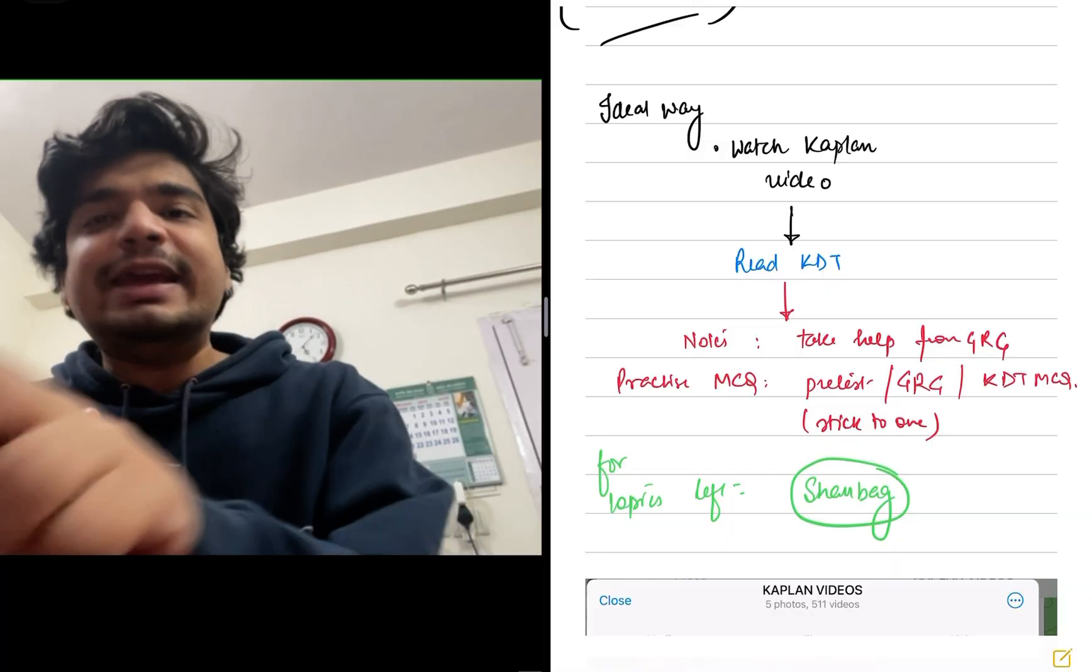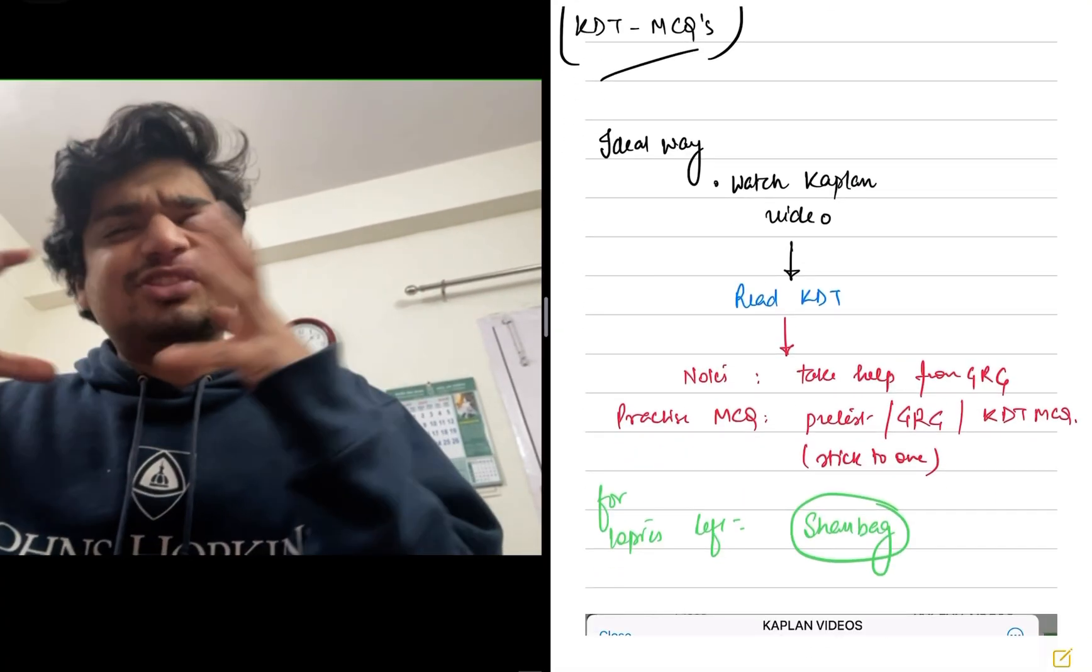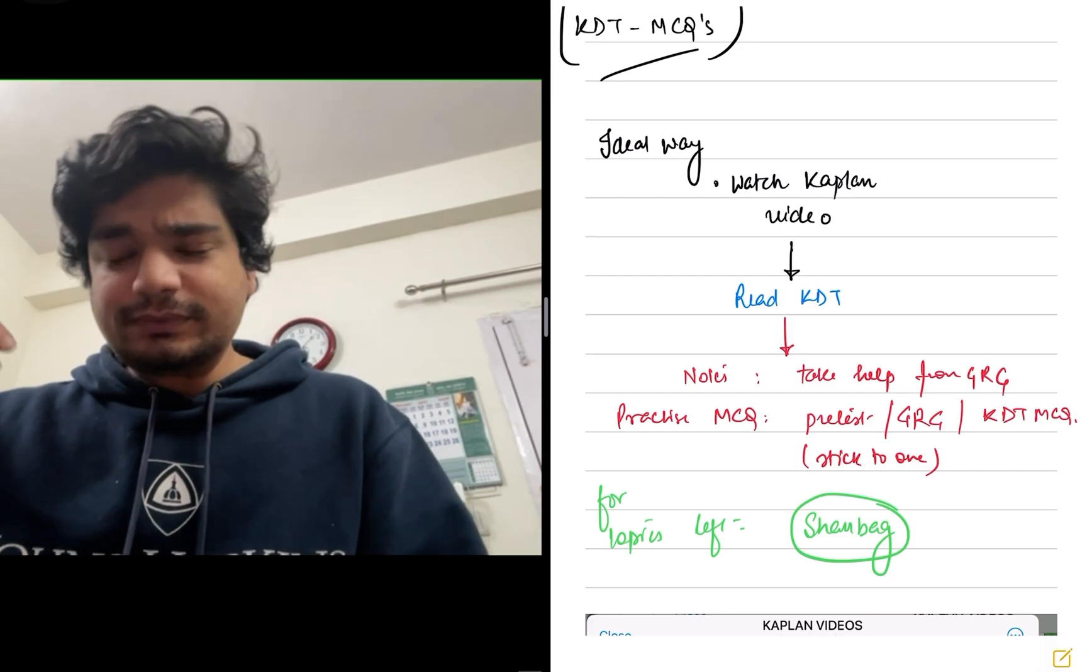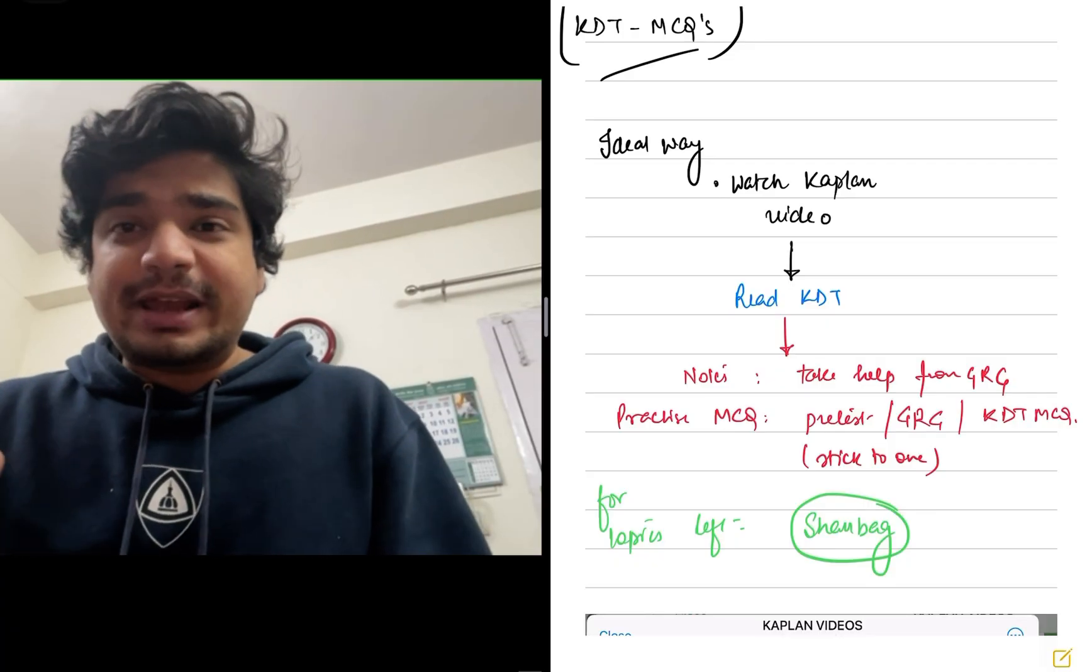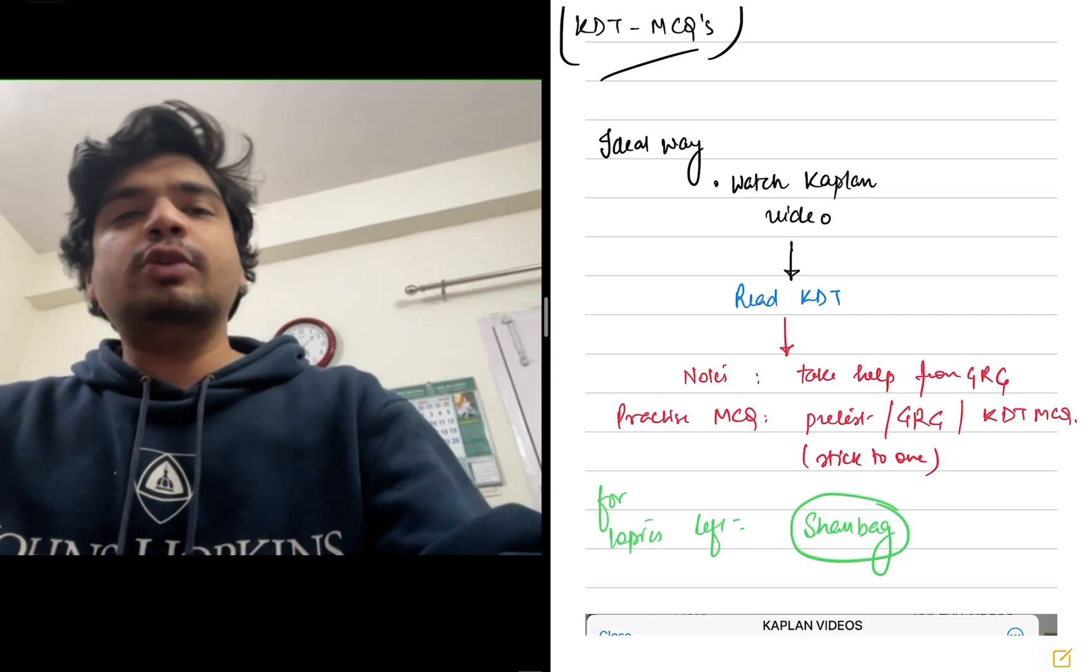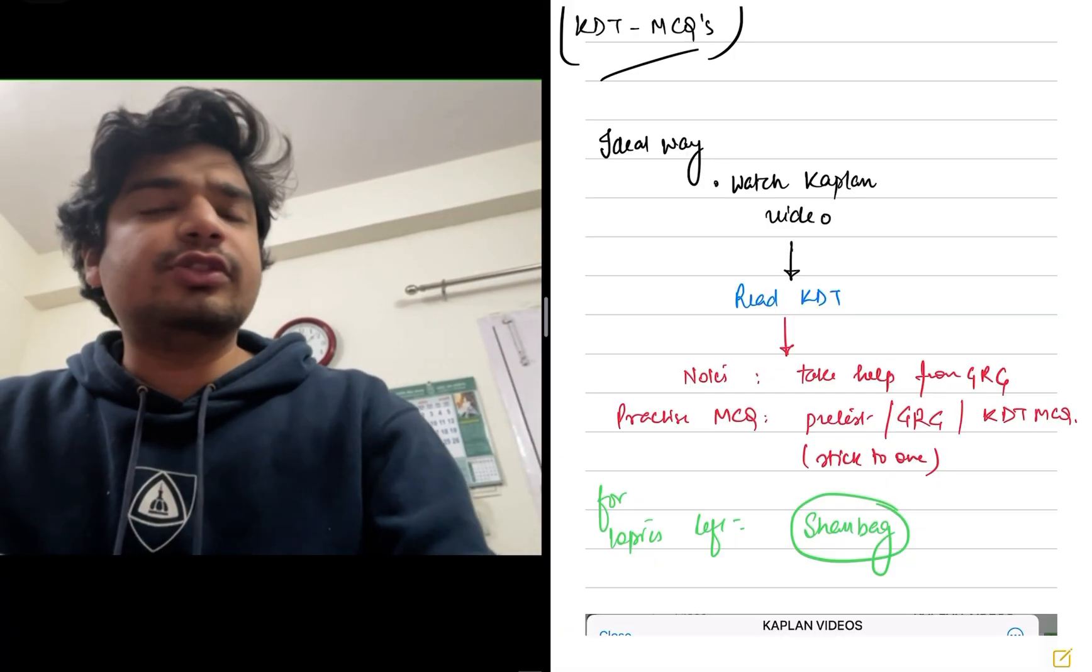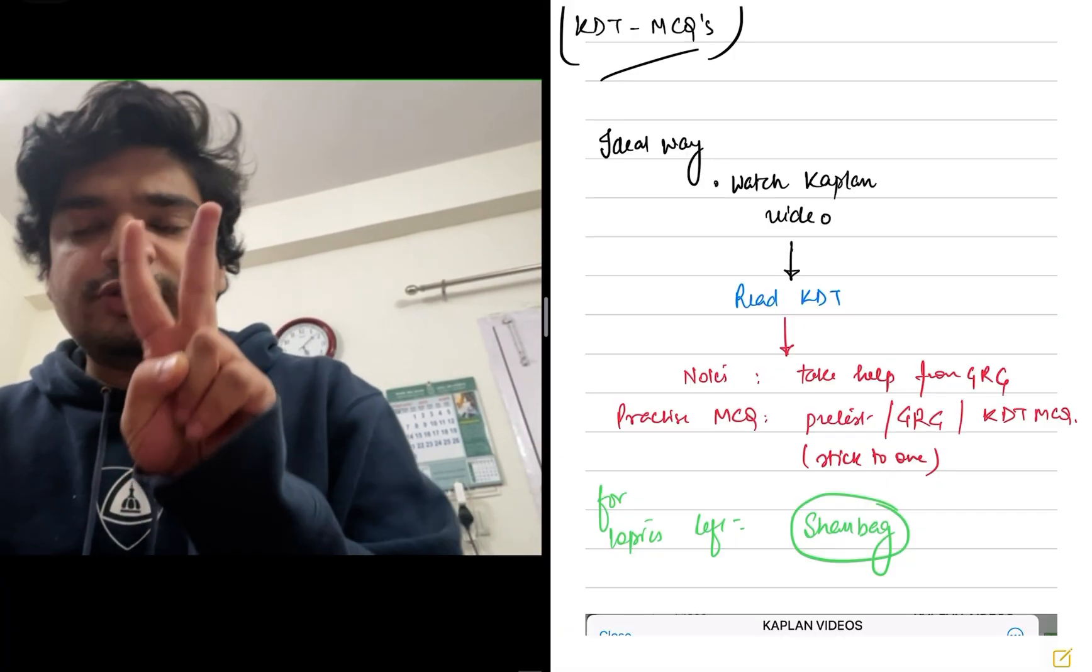While making notes from KDT, take help from GRG review book. Okay, because GRG is essentially a note making of KDT that has been done. So you can just use GRG to make your own notes. And if you're not in a mood, you can just focus on GRG as the go-to resource while you are preparing as a review part. Then practice MCQs. For MCQ practicing, you can use either the KDT pharmacology MCQs or you can use pretest. I'll prefer to do it as pretest because clinical based questions are going to be available.